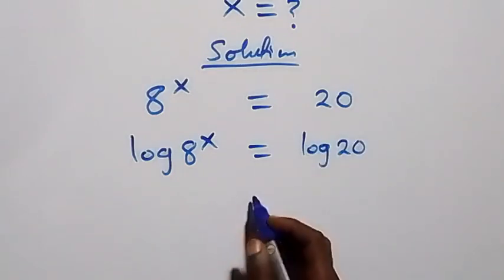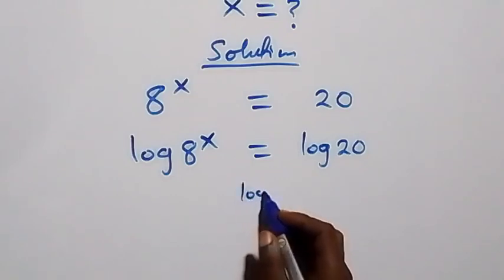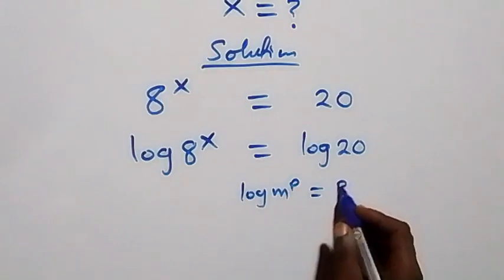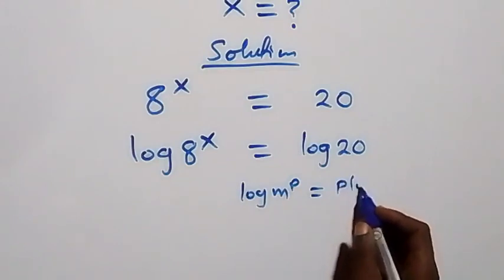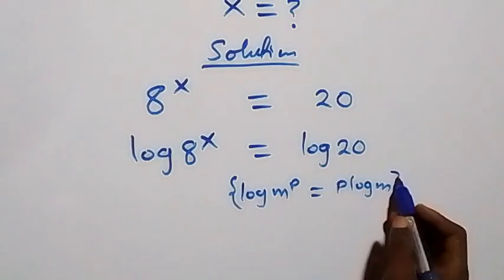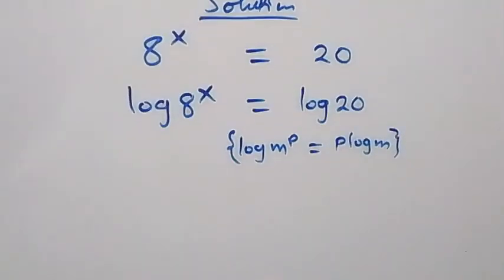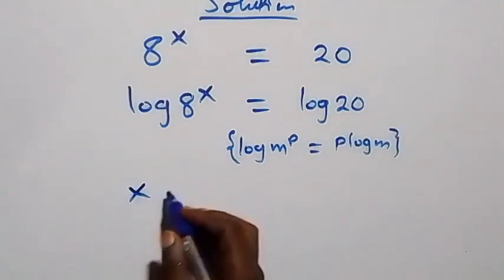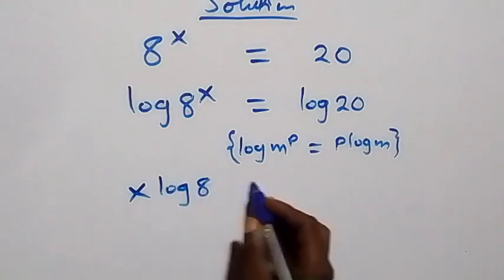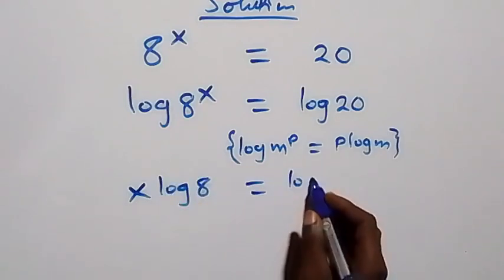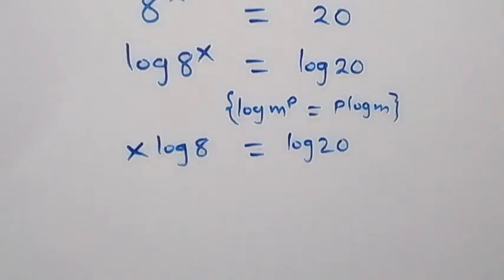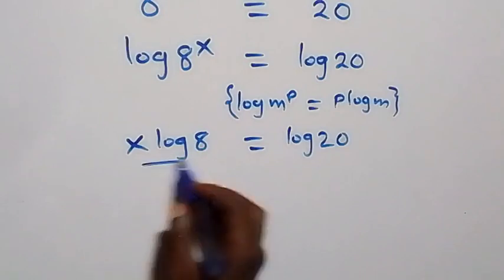From the power rule of logarithm — log m raised to power p equals p log m — what we have becomes x log 8 equals log 20. From here, the next step is to divide both sides by log 8.